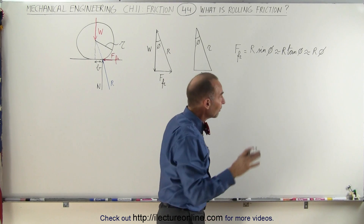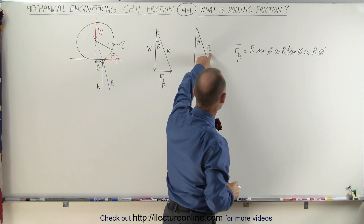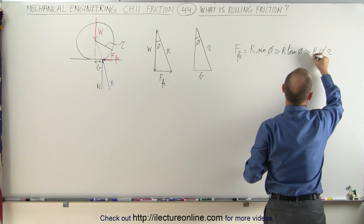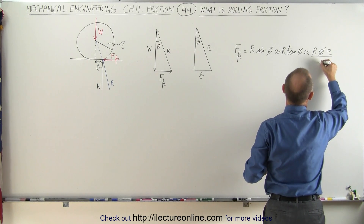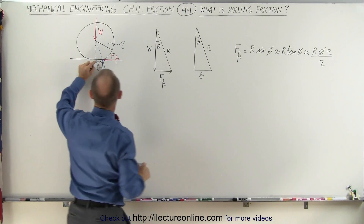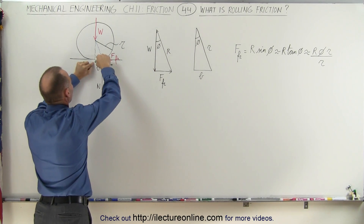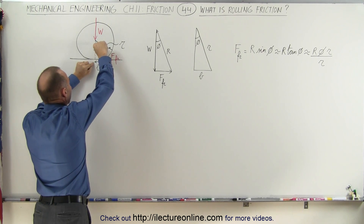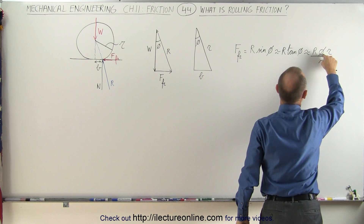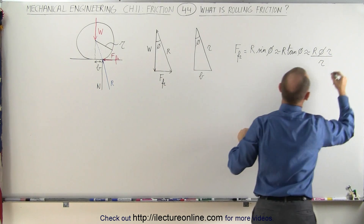If we now multiply and divide by R — R being the radius of the wheel — we multiply times R and divide by R. We realize that the distance B can be expressed in terms of the radius R and the angle phi. So R times phi is really B, the coefficient of rolling friction.